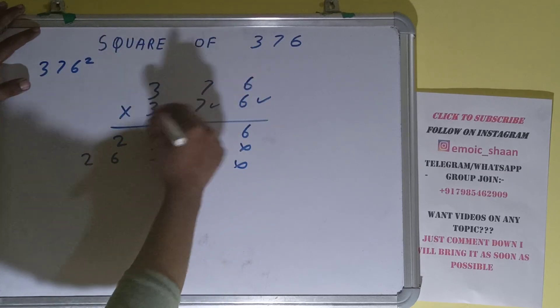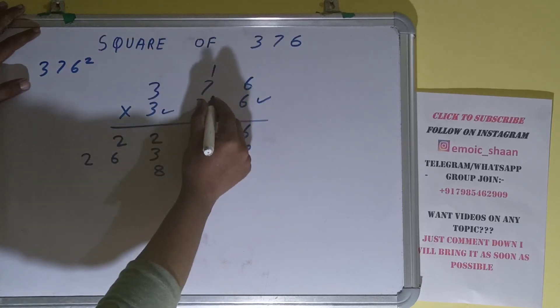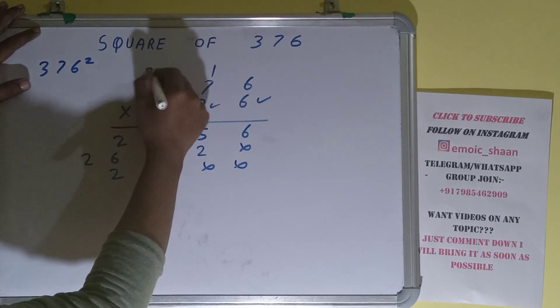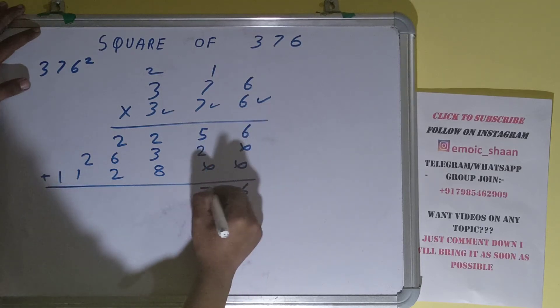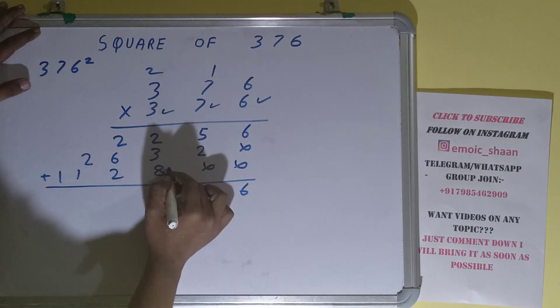2 carry. 3 times 3 is 9 plus 2 is 11. Add everything carefully. 6, 7, 8 plus 2 is 10 plus 3 is 13, 1 carry. 6 plus 2 is 8, 9, 10, 11, 1 carry. 4, 1.